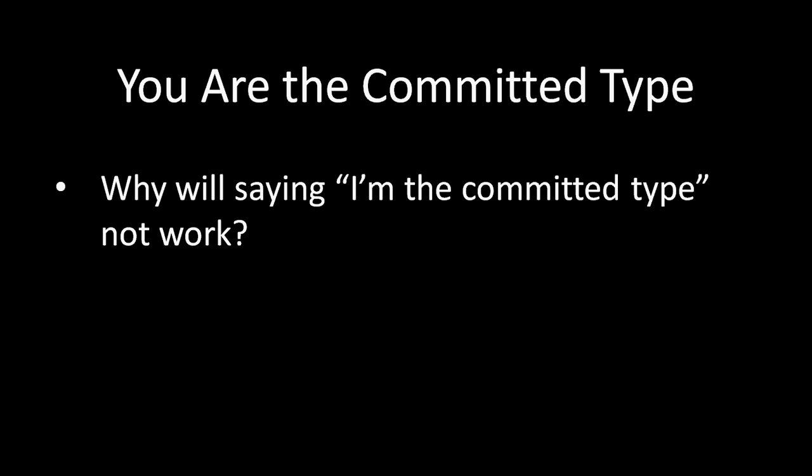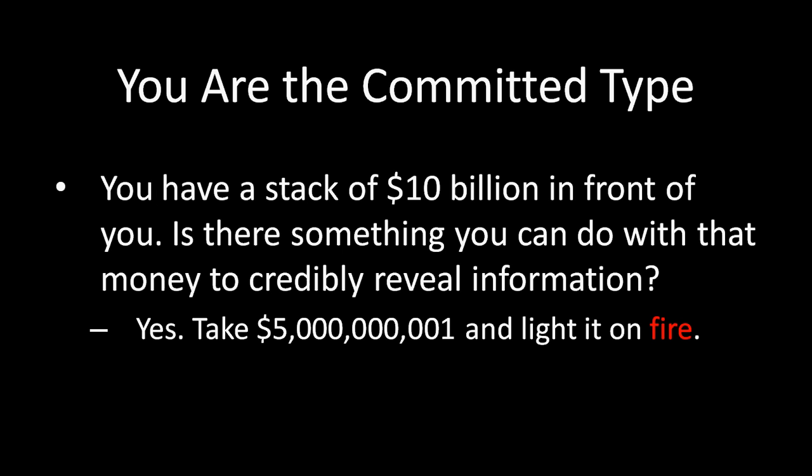What I really need to know is whether you actually are the committed type. I want to see something that only the committed type would do — something the uncommitted type would not do — and it's the observation of that thing that only the committed type would do that's going to convince me that you are, in fact, the committed type. So that's how costly signaling is going to come into play. Imagine you have a stack of $10 billion in front of you. Is there something you can do with that money to credibly reveal that you are this resolved, committed type who is going to intervene if I try to overturn the status quo?